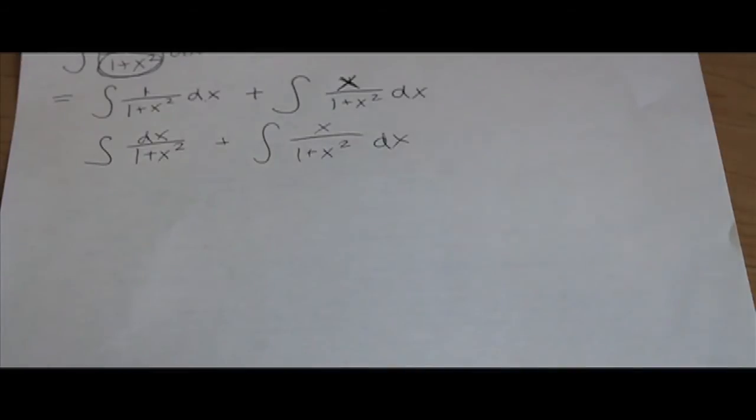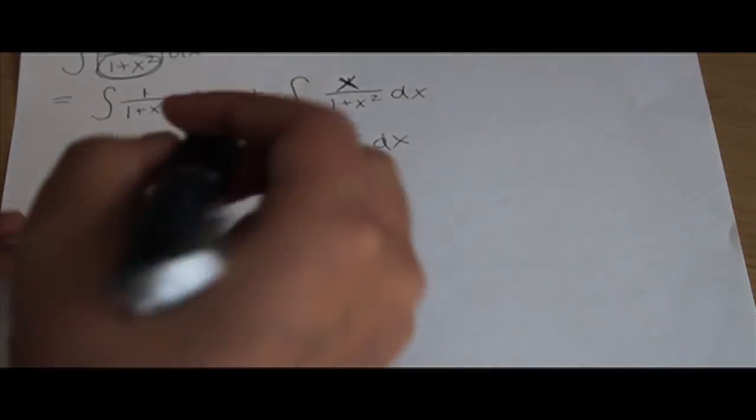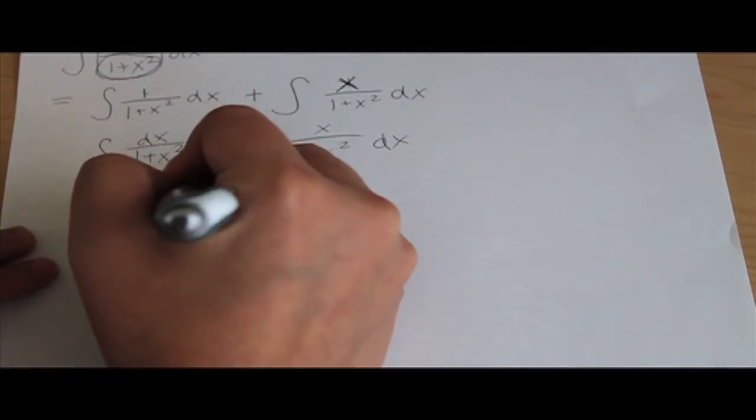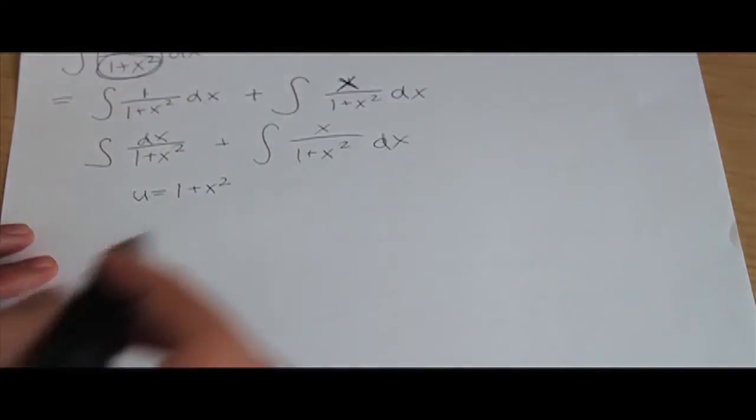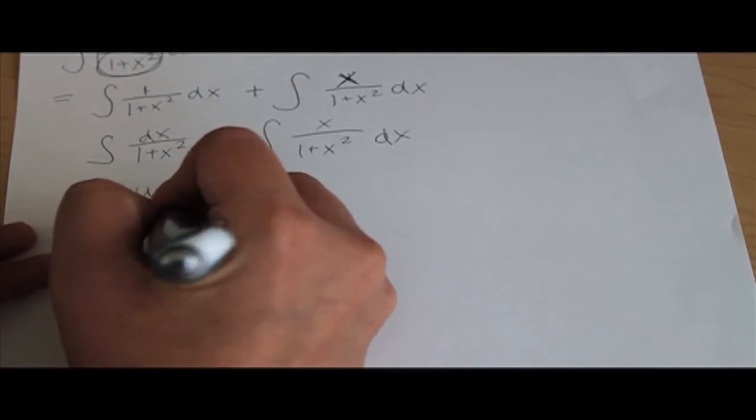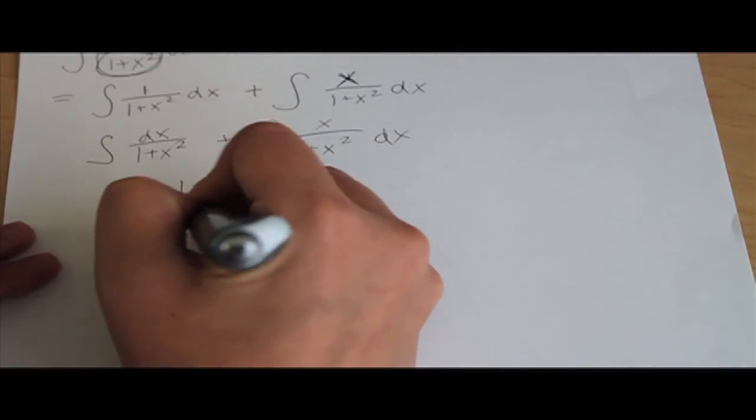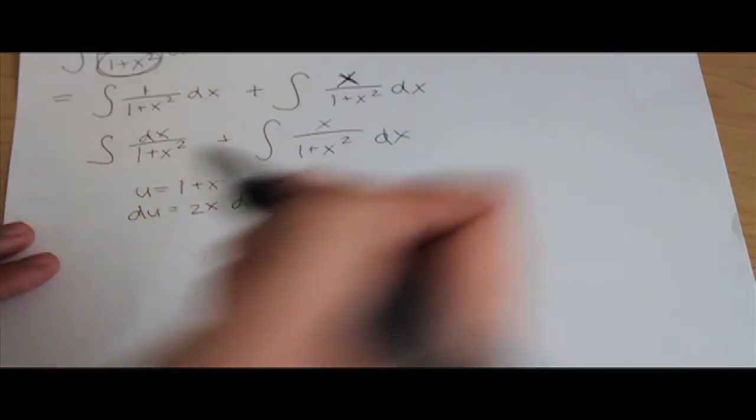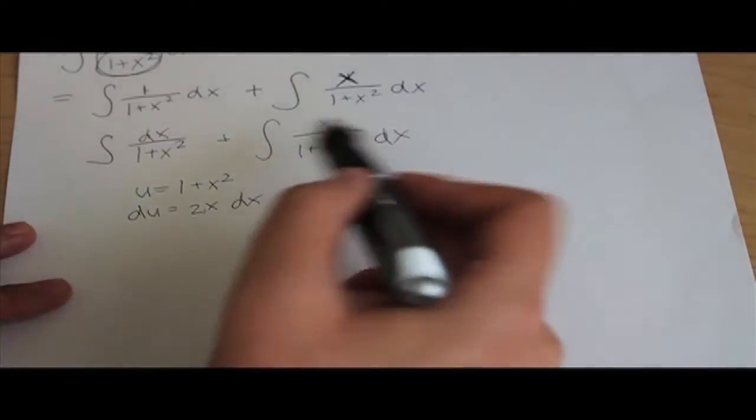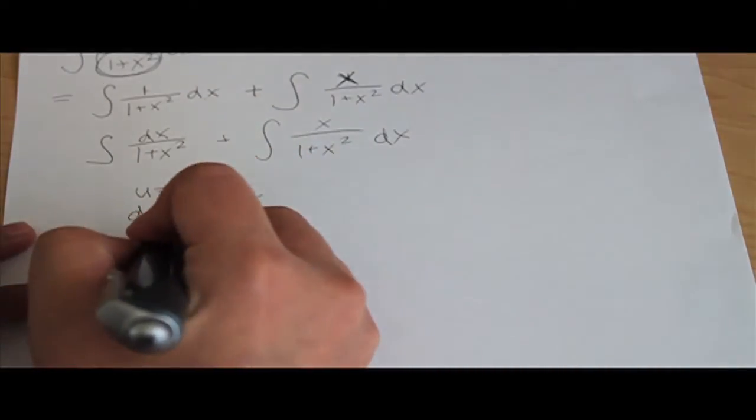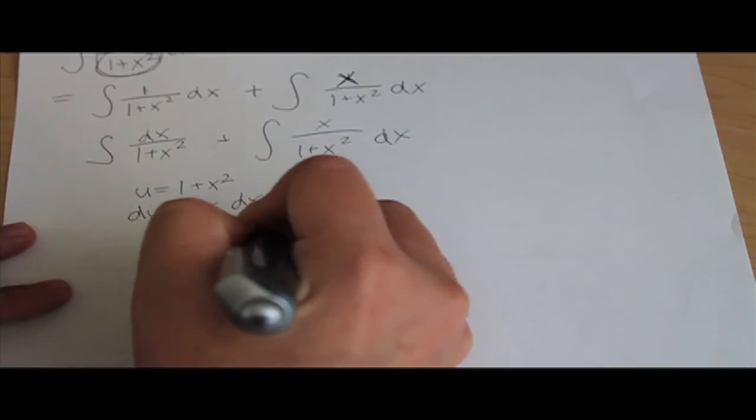Now the first thing you're going to want to do is u substitution. You're going to want to pick 1 plus x squared as your u substitution because both of the integrals have them. So u equals 1 plus x squared. Then we're going to get the derivative, so du equals the derivative of 1 is 0 plus the derivative of x squared is 2x, and then we put the dx at the end because we're implicitly differentiating. Now we're going to bring this 2 over because we don't see any 2's in our integrals. So it's going to be du over 2 equals x dx.